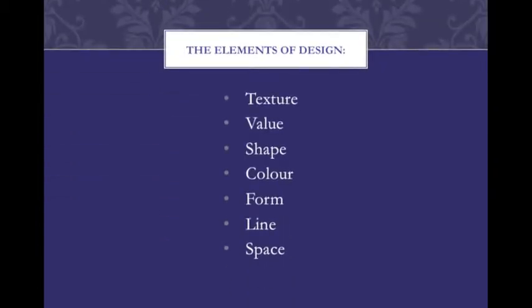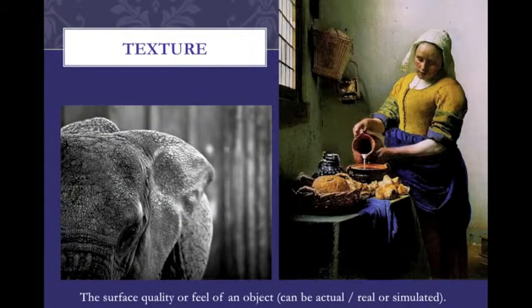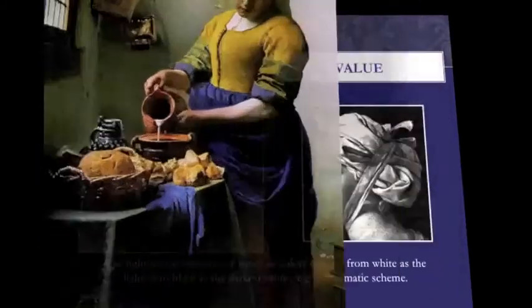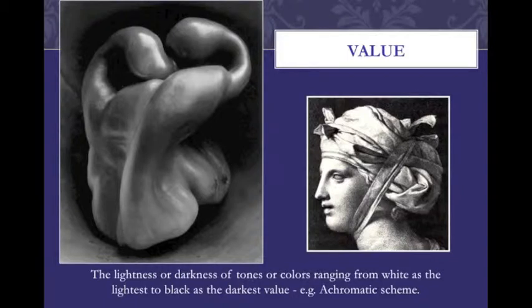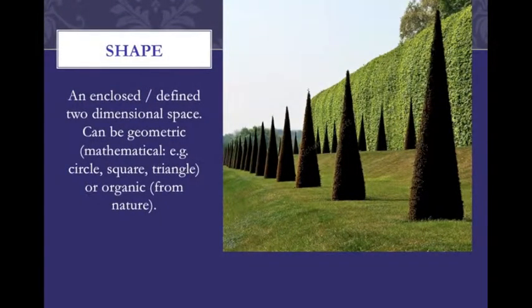The elements of design include texture, value, shape, color, form, line, and space. Texture is the surface quality or the feel of an object — it can be actual and real, or simulated. Value is the lightness or darkness of tones or colors, ranging from white as the lightest to black as the darkest, for example in an achromatic scheme.